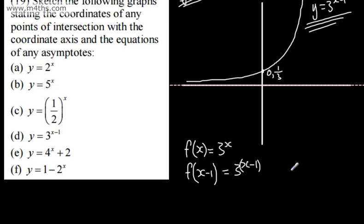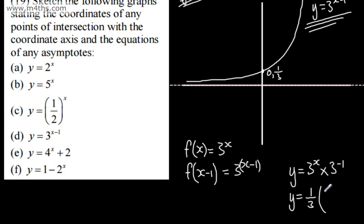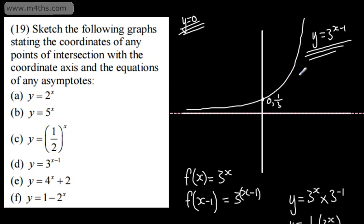Alternatively, we could write y = 3^(x−1) as 3^x multiplied by 3^(−1), so as a scale factor: (1/3) × 3^x. That stacks up — originally we went through (0, 1), but now we go through (0, 1/3) because it's a stretch of scale factor 1/3 in the y-direction. If it were x − 2, the point would become (0, 1/9), and so on.